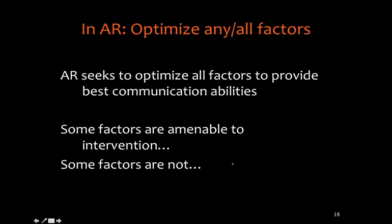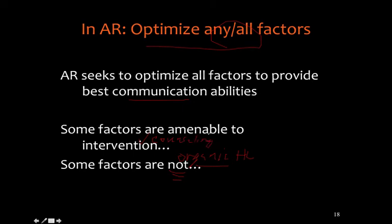In oral rehab we want to optimize any and all of those factors to provide best communication abilities. Some factors are amenable to intervention and some aren't. Organic factors related to the hearing loss — such as poor word recognition due to auditory nerve or cochlear function — are sadly very difficult to improve. But other factors can be improved through intervention, counseling, and guidance to significant others and frequent communication partners.